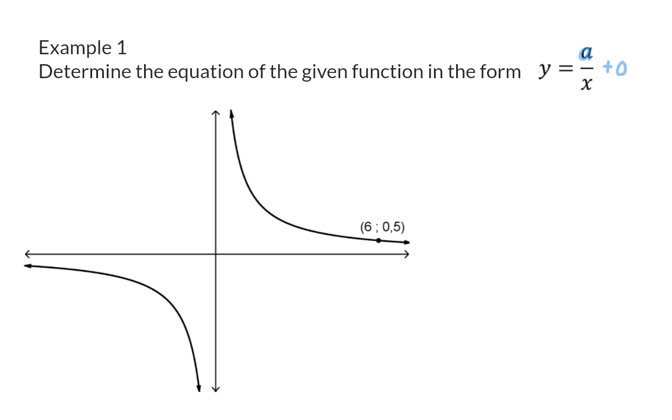Because this function lies in the first and third quadrant, we know that the value of A should be positive. The information given on the sketch is a coordinate that consists of an x and a y value that can be substituted into the equation.